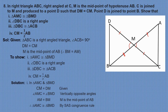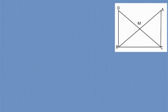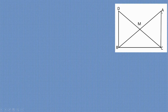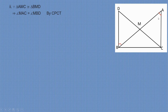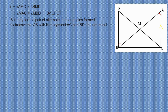Now let's show that angle DBC is a right angle. Since triangle AMC is congruent to triangle BMD, angle MAC equals angle MBD by CPCT. But these form a pair of alternate angles formed by transversal AB with line segments AC and BD and are equal. Therefore, AC is parallel to DB.